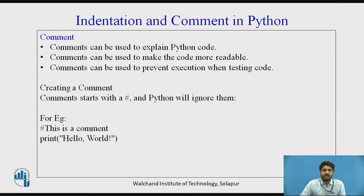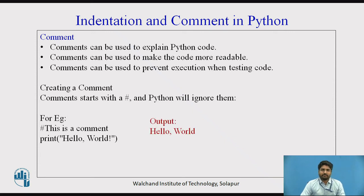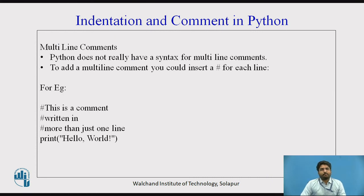We will see what is a comment. Comments can be used to explain Python code, to make the code more readable, and to prevent execution when testing code. A comment starts with a hash (#) symbol and Python will ignore it. For example, if you write # This is a comment, followed by print hello world, the output will be only hello world. For multiline comments, Python does not really have a syntax for multiline comments. To add a multiline comment, you could insert a hash symbol for each line — for example, # this is a comment, then again # written on more than one line, then print hello world — the output will be hello world.